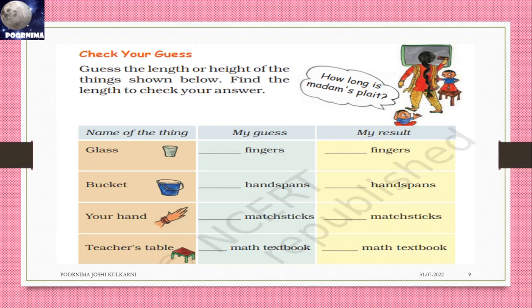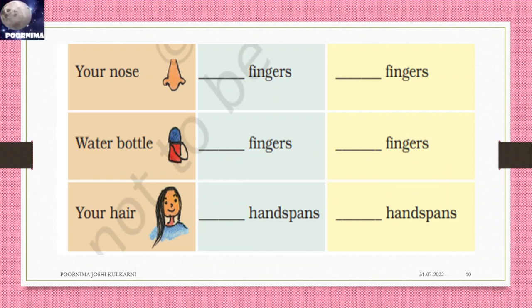How long is Madam's plate? Guess the length and height of the things shown below. Find the length to check your answer. Name of the thing: glass - my guess three fingers, my result three fingers. Bucket: guess is eight handspans, result is nine handspans. Your hand: how many matchsticks? Two matchsticks. The result is two matchsticks. Teacher's table: how many matchboxes? Ten or six?